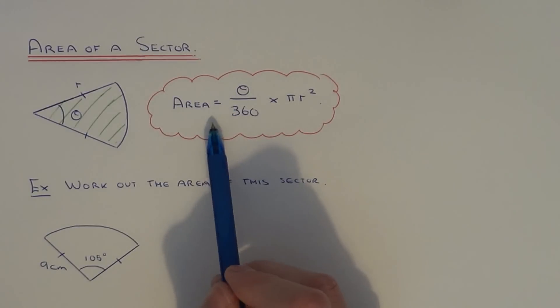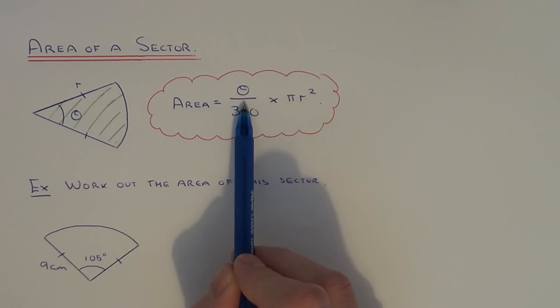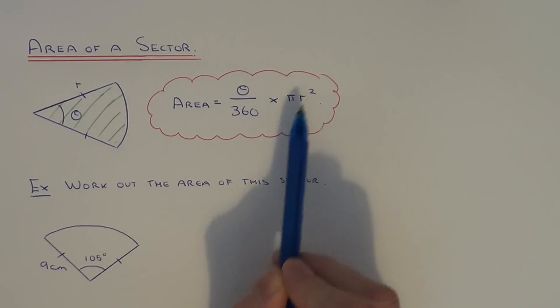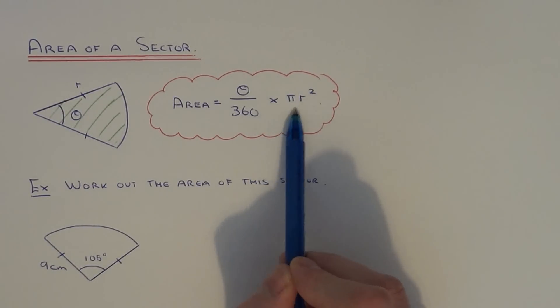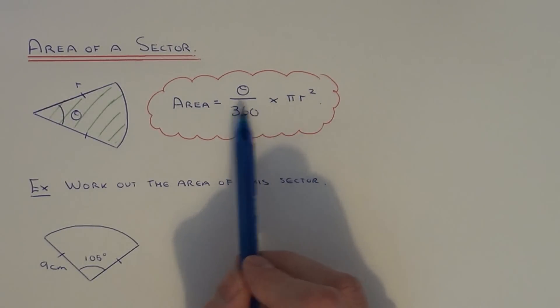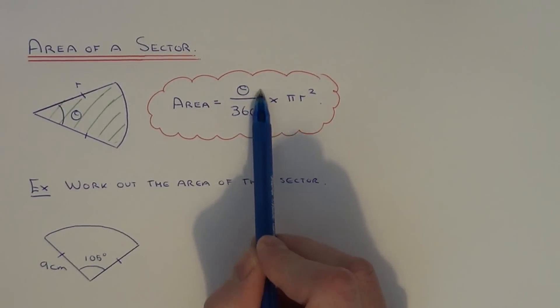To do this we can use the formula which we have over here. If you know the angle and the radius we can do theta divided by 360 times pi times the radius squared. This bit of the formula is basically the area of the whole circle. What we are doing is we just need a little bit of the whole circle so we have this fraction here at the front of the formula.